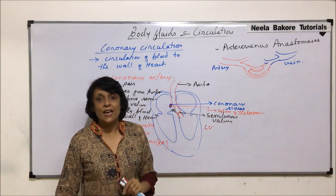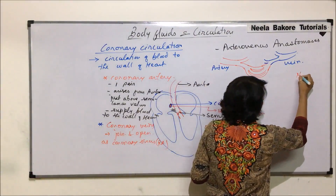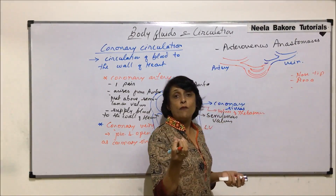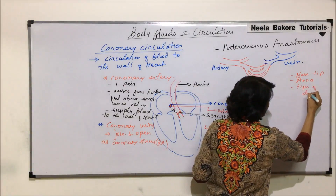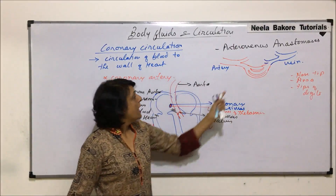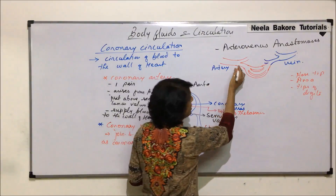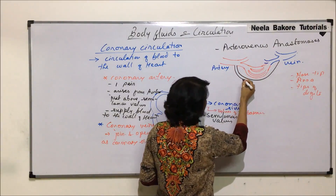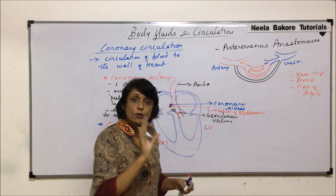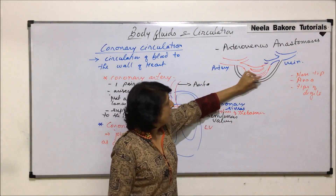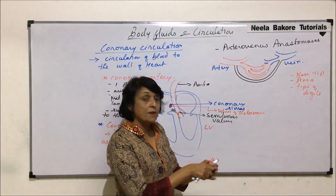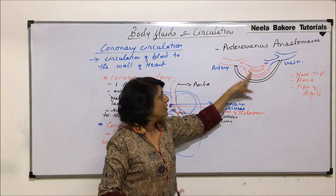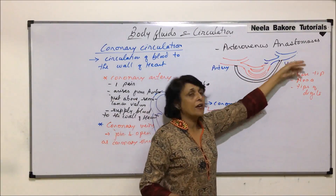In certain areas of the body — the nose tip, pinna (that is the external ear), and the tips of the digits — there is a special arrangement. Apart from the normal capillary path, there is a connection directly from the artery to the vein. In normal conditions, this connection remains closed, so blood goes through the artery, arterioles, capillaries, heat radiation takes place, and blood returns to the veins.